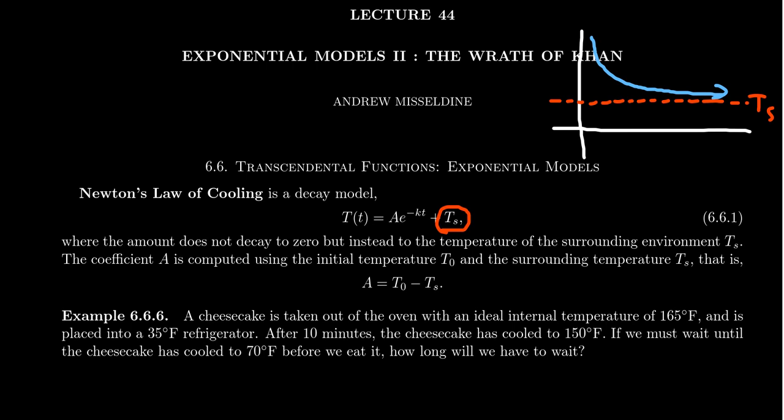As we've seen previously, the plus K, or in this case plus TS, a part of this exponential function gives us the location of the horizontal asymptote. This plus TS is going to give us some type of vertical shift up or down on the graph, and that'll move the asymptote from the X axis to this location right here. That's why we want to use this.